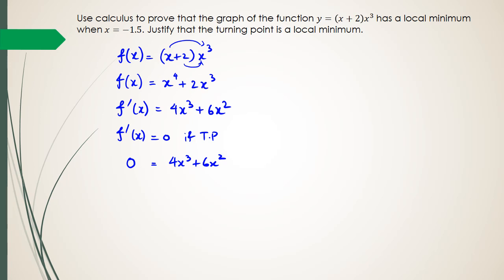At this point you're probably wondering how to solve this. Remember that x squared is a common factor and 2 is also a common factor, so you can take 2x squared out, and what you're left with inside the bracket is just 2x plus 3.